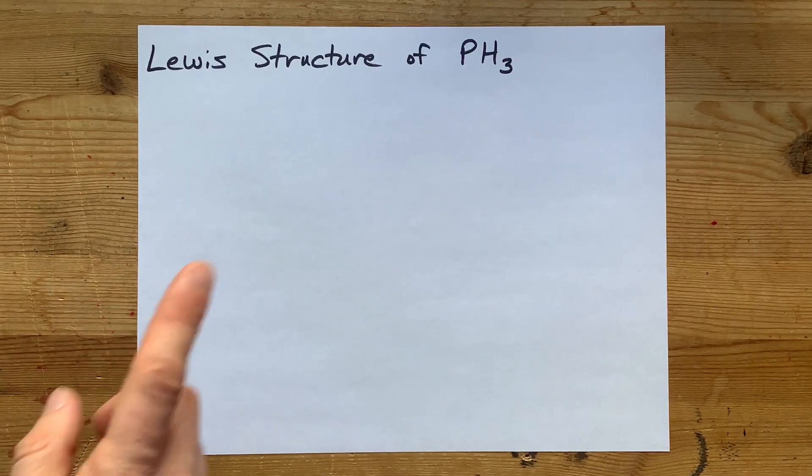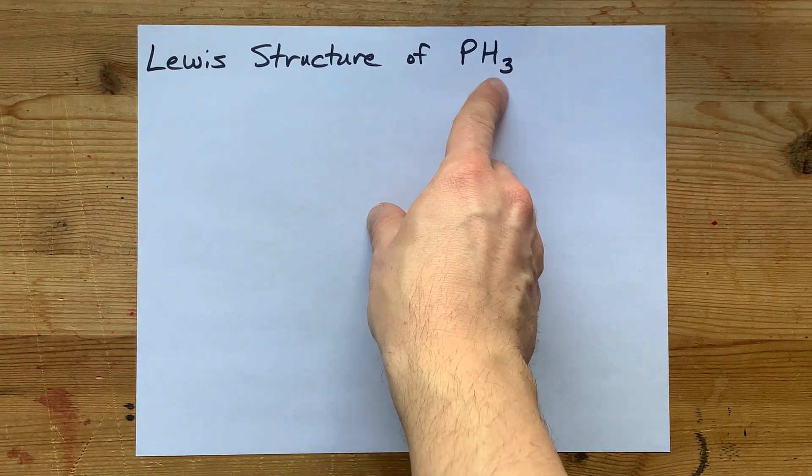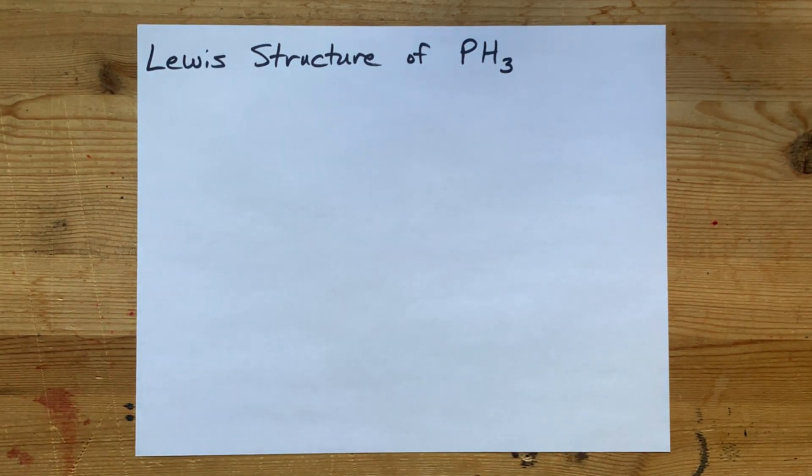We're going to draw the Lewis structure for PH3. This is phosphorus trihydride.